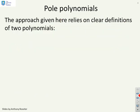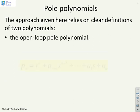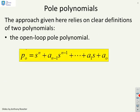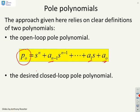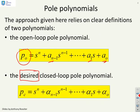The approach here relies on clear definitions of two polynomials. The open-loop pole polynomial — here I've used the terminology PO for open-loop — is given with coefficients a. And then the closed-loop polynomial, and I emphasise here the desired closed-loop pole polynomial, that's the one that you want. You'll see I've used C for closed-loop and given it coefficients alpha, so you can distinguish quickly between open-loop and closed-loop.